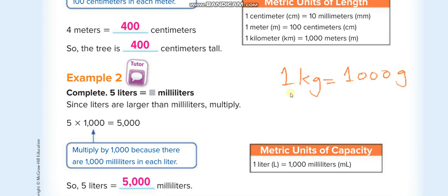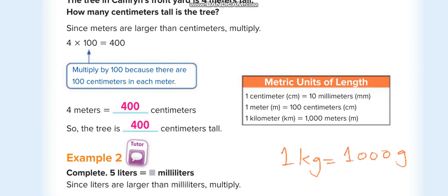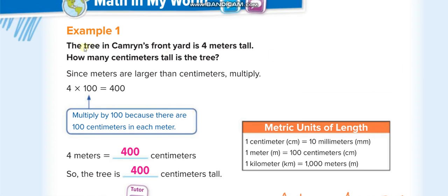For mass, one kilogram is equal to one thousand grams. From kilograms to grams you multiply by one thousand; from grams to kilograms you divide by one thousand. For capacity, one liter is equal to one thousand milliliters, so from liters to milliliters you multiply by one thousand, and from milliliters to liters you divide by one thousand.